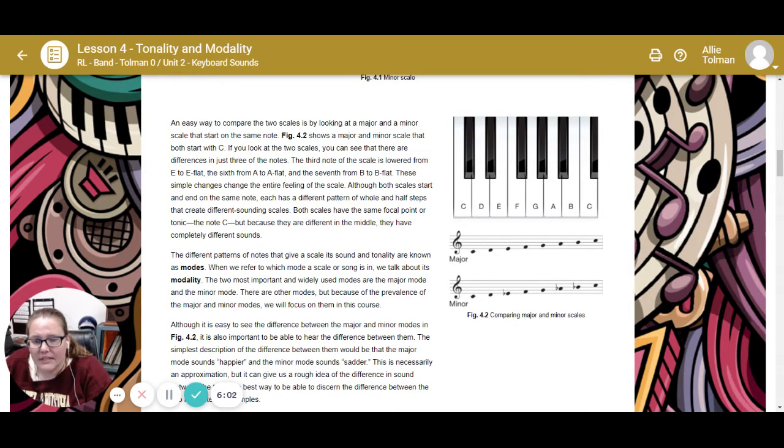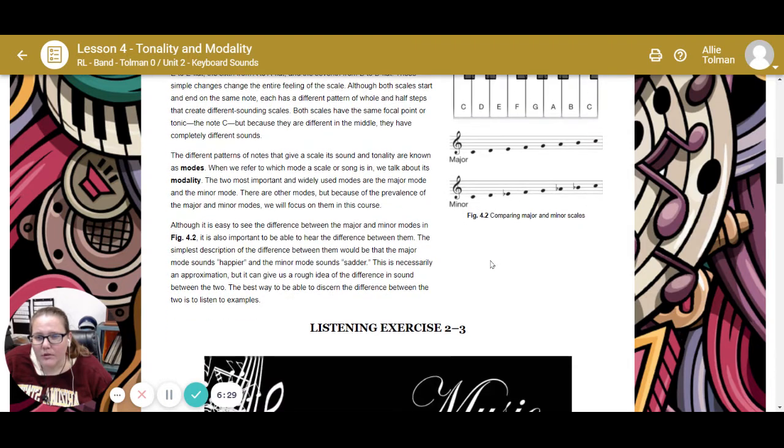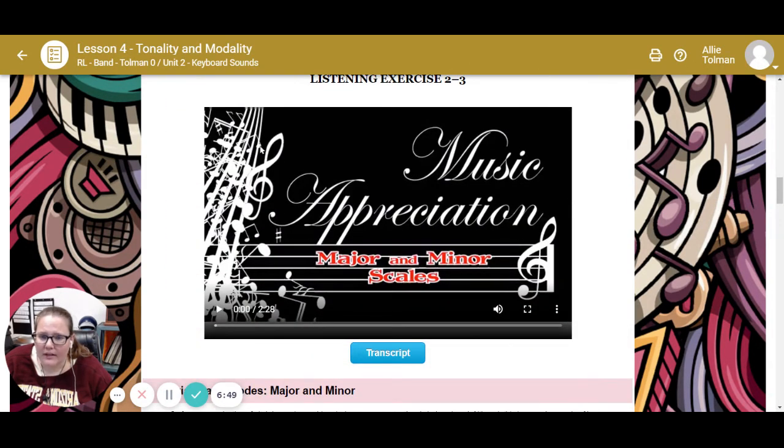The different patterns of notes that give the scale its sound and tonality are known as modes. When we refer to the mode of a scale or song, we talk about its modality. The two most important and widely used modes are the major and the minor. Although it's easy to see the difference between major and minor modes in Figure 4.2, it's important to be able to hear the difference between them. The simplest description would be major sounds happy and minor modes sound sad. The best way to discern the two is to listen to examples.